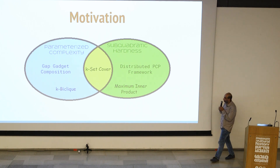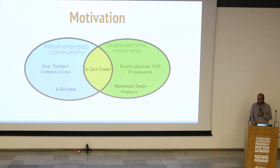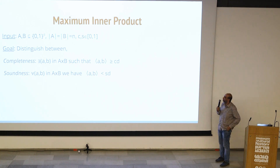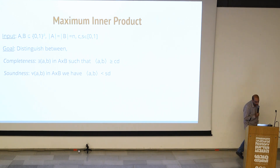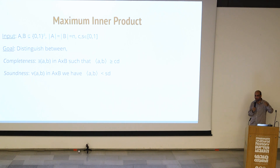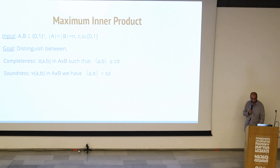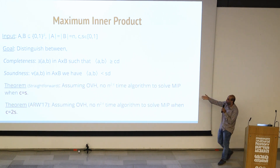I want to look at the maximum inner product problem, phrase it as the bi-clique, and try to show how a gap can be amplified. We have two sets of points A and B in D dimensions — they are binary vectors — and you want to distinguish two cases. In the yes case, there exist points a in A and b in B such that their inner product is at least C times D. In the no case, for every pair, the inner product is at most S times D. When C equals S this is the exact version with no real gap.